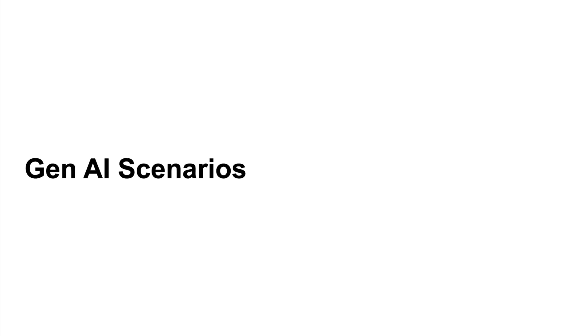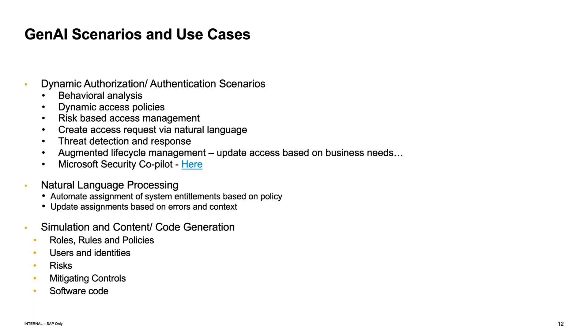Now I'd like to take you through a couple of scenarios we're seeing for generative AI. The way we're looking at generative AI, there are a couple of different categories. We're seeing generative AI being applied in what I'd call dynamic authorization or authentication scenarios. This involves bringing in other information either during authorization or authentication decisions that can modify the decision — whether to approve or deny, or dynamically apply a different condition in the authorization or authentication.